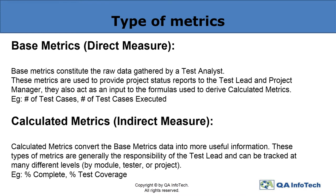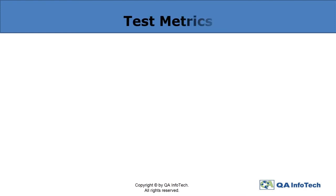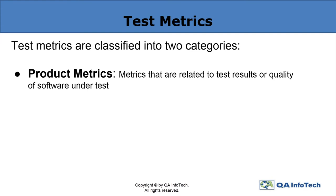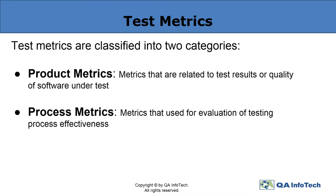Calculated metrics may include the percentage completed or the percentage of test coverage. Test metrics are further categorized into product metrics, related to the test results or the quality of software under test, and process metrics, which serve as a way to evaluate the effectiveness of the testing process.